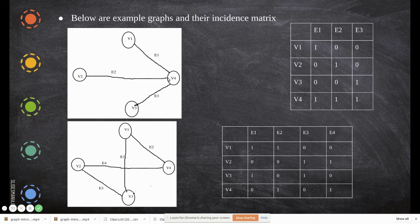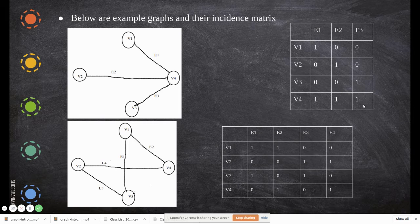For v3: it is connected with e3, so e3 is 1, while e1 and e2 are zero. For v4: it has connections with e1, e2, and e3, so all three entries are 1, since v4 is connected to all three edges.